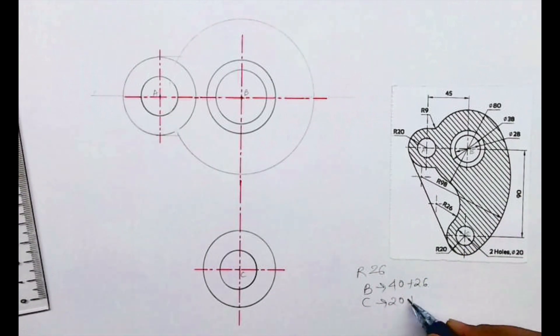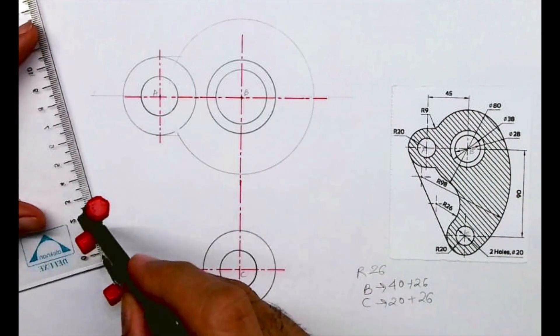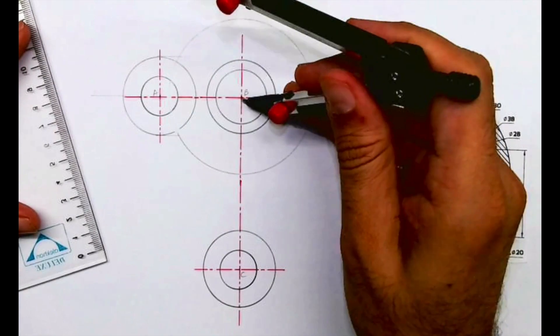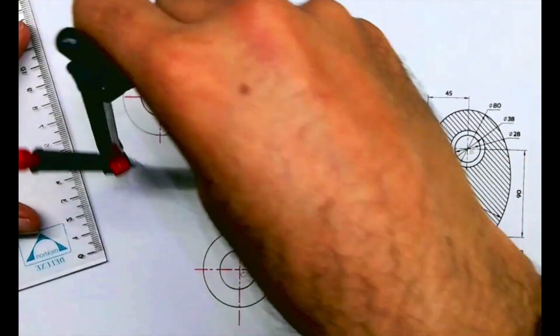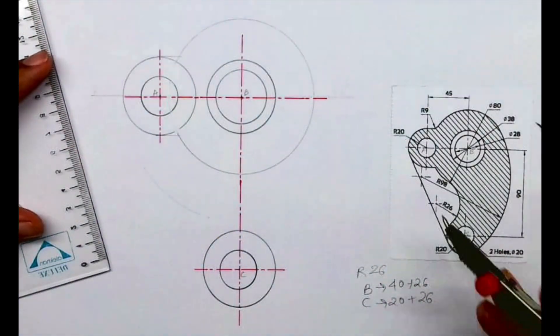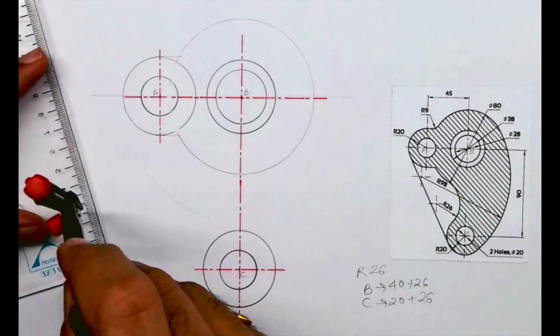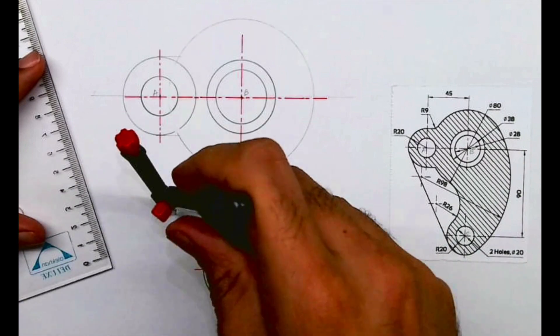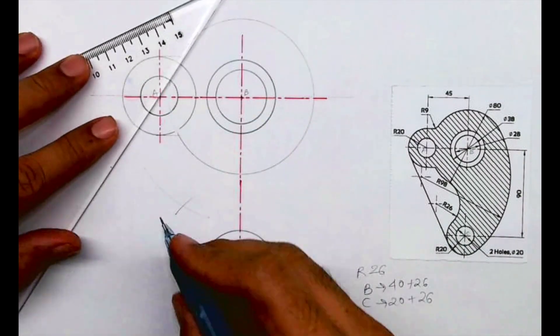Because if you see radius 26, it is touching two circles: circle from B and circle from C. That's why I am adding both the radiuses. It is touching externally, so we need to add up. So from B you cut 66 and from C you cut 46. Wherever they intersect, from that point we can draw a curve of radius 20.